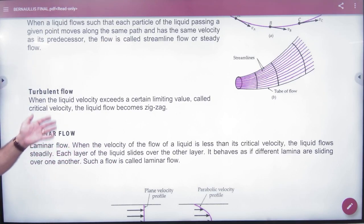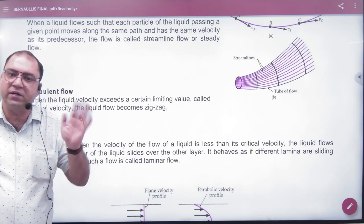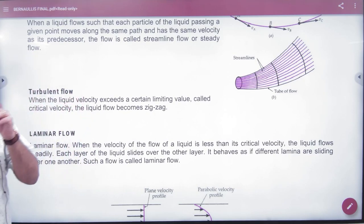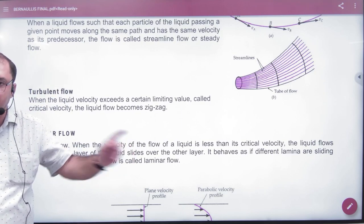In the turbulent flow, we cannot predict the particle's velocities. We do not know what will happen in the next instant. But in the streamline or steady flow, we can predict the particle's velocities because it follows a fixed pattern.